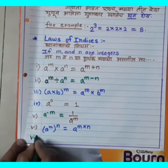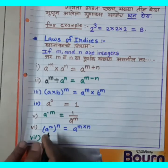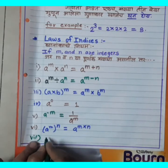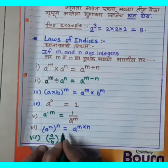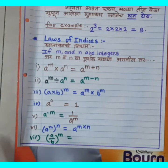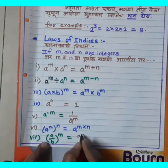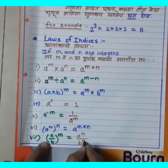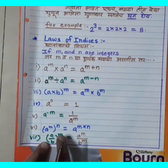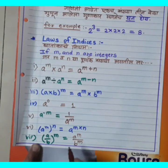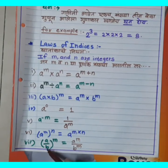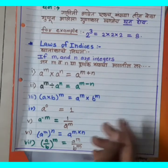Seventh Rule: (A upon B) bracket raise to M. The answer is A raise to M divided by B raise to M. So (A/B)^M = A^M / B^M. A cha M waa ghat divided by B cha M waa ghat.